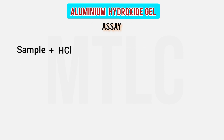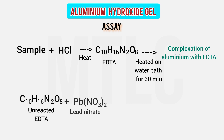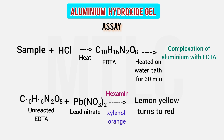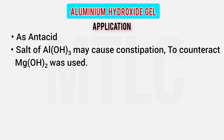For assay of aluminium hydroxide gel: dissolve in hydrochloric acid, heat, add EDTA, raise pH, and warm for half an hour. Since aluminium does not form a stable complex readily, back titration is done using lead nitrate, hexamine buffer, and xylenol orange indicator. The endpoint changes from lemon yellow to red. Note: if you use aluminium salts, they may cause constipation. That's why aluminium hydroxide is often combined with magnesium hydroxide.